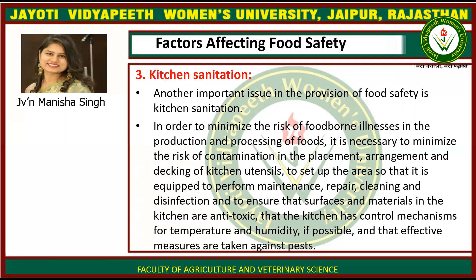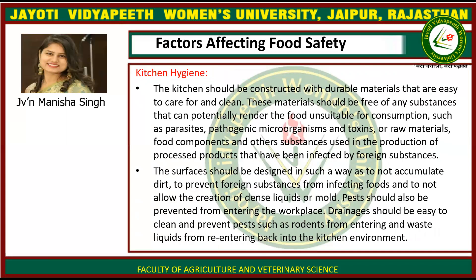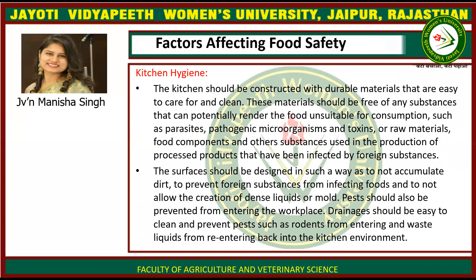Effective measures should also be taken against pests. The kitchen should be constructed with durable materials that are easy to care for and clean. These materials should be free of any substances that could render foods unsuitable for consumption, such as pathogenic microorganisms, toxins, or foreign substances. Surfaces should be designed to not accumulate dirt, to prevent foreign substances from contaminating foods, and to not allow the creation of dense liquids or mold.